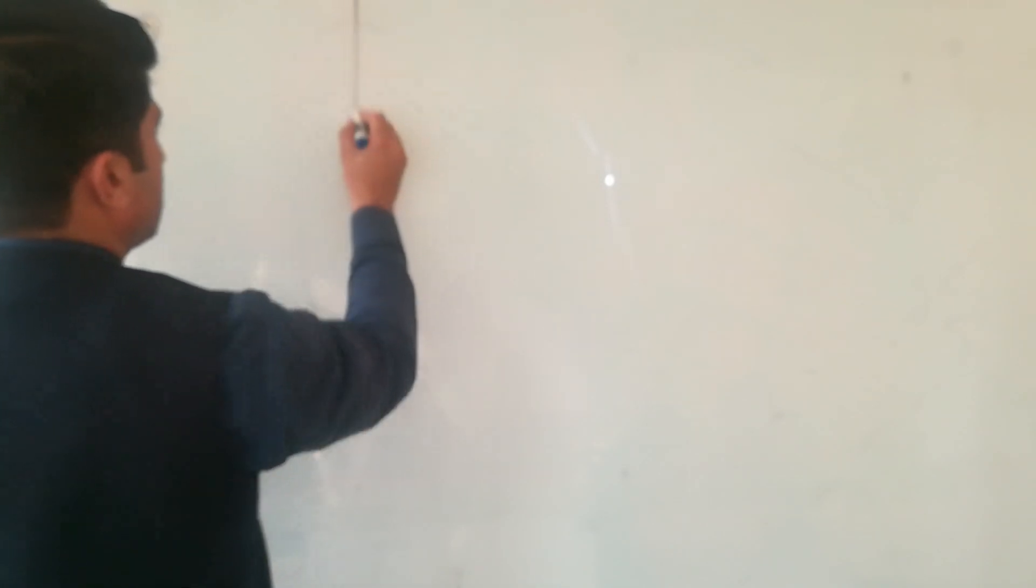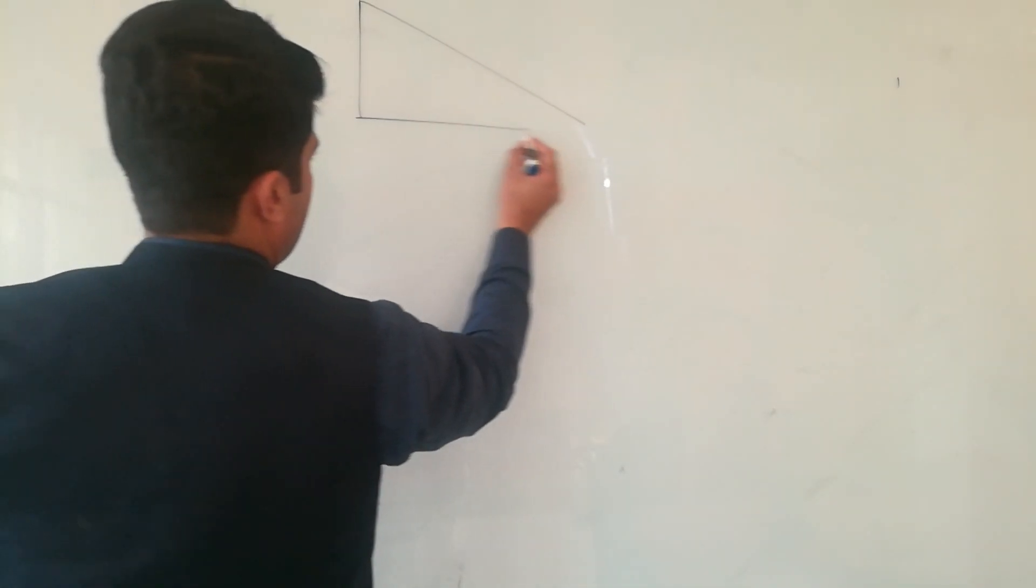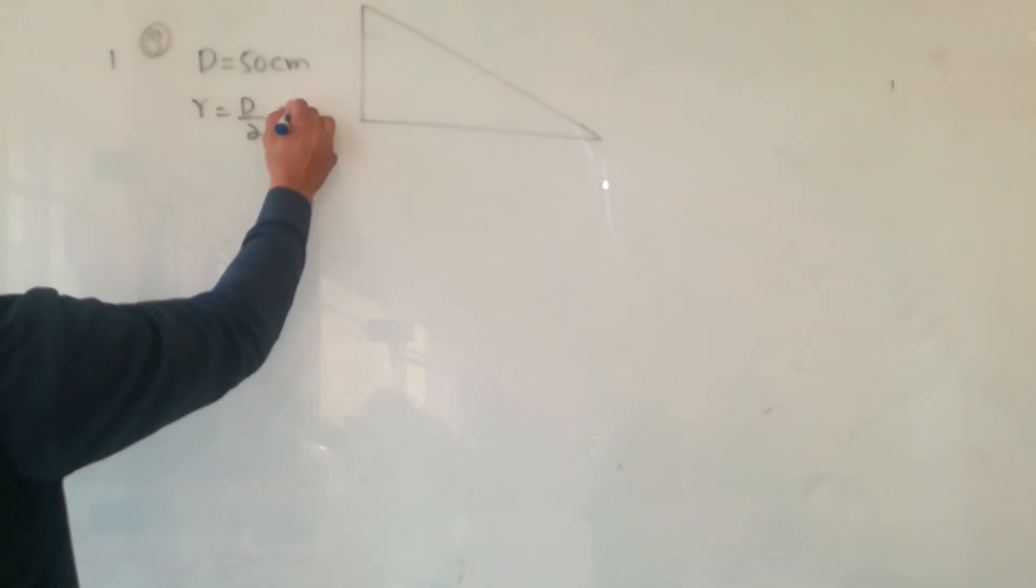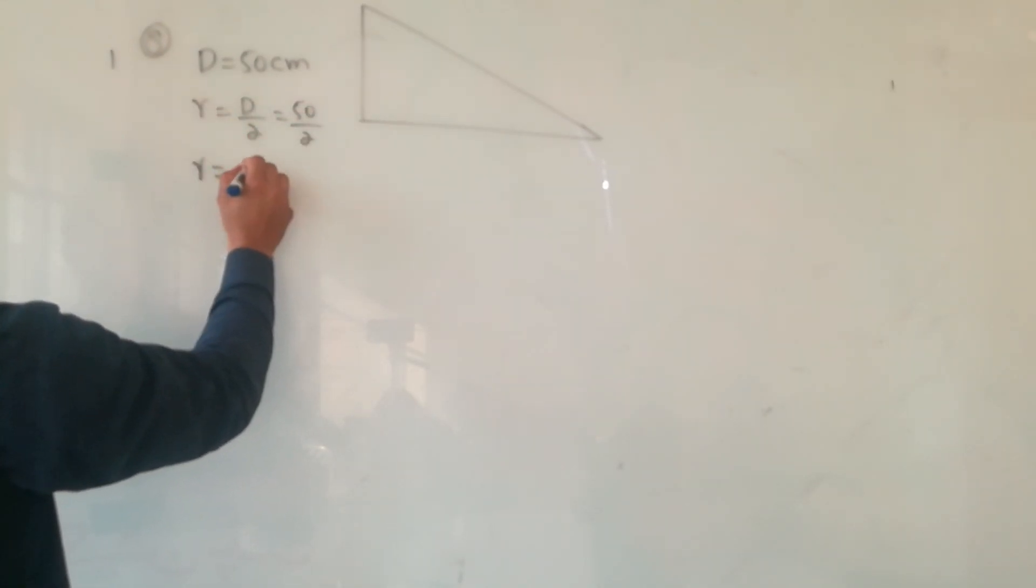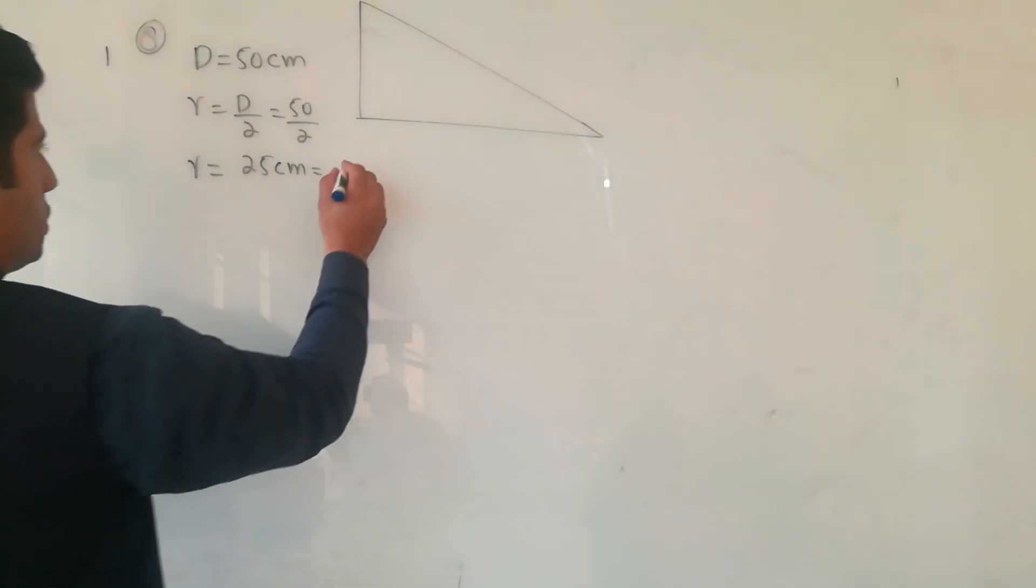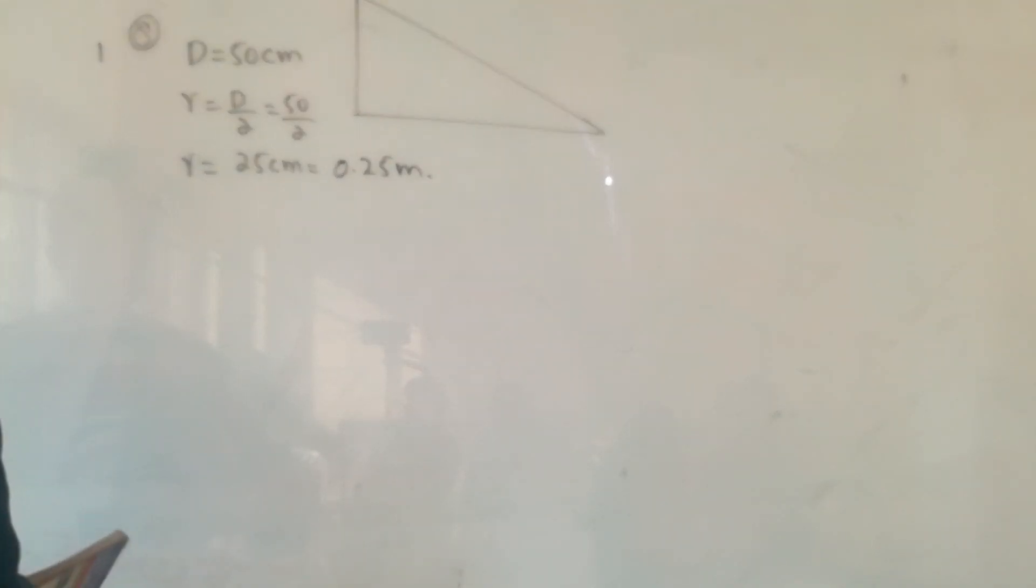Question number 8: A cylinder of 50 centimeter diameter at the top of an incline. The cylinder diameter is 50 centimeter. The radius is D divided by 2, so 50 divided by 2, that is r equals 25 centimeter, or in meters that is 0.25 meters.